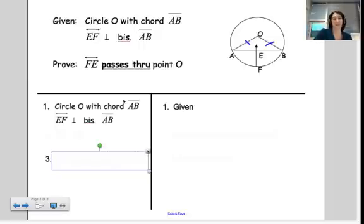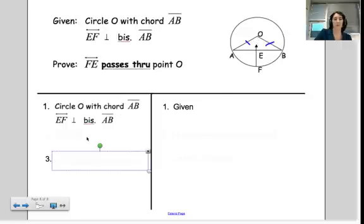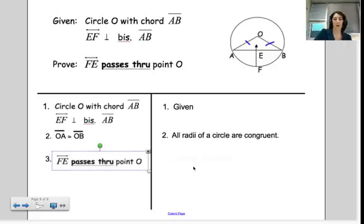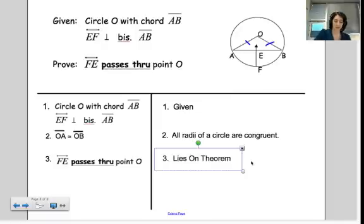After a quick costume change, we're going to look at a proof that shows one way to use the lies on theorem, the converse of the perpendicular bisector theorem. We have circle O, so we know O is the center with chord AB. Line EF is given as perpendicular bisector to segment AB, and we want to prove that line FE passes through point O, the center of the circle. We use the all-radii-of-a-circle-are-congruent theorem — there's no shortcut for that — so segment OA is congruent to segment OB. That's all we need: line FE passes through point O because of the lies on theorem. If a point is equidistant from the endpoints of a segment, then it lies on the perpendicular bisector of the segment.